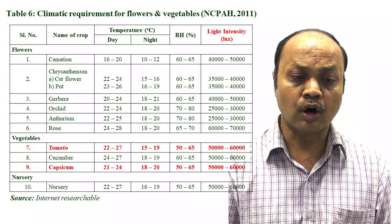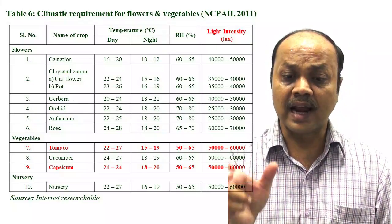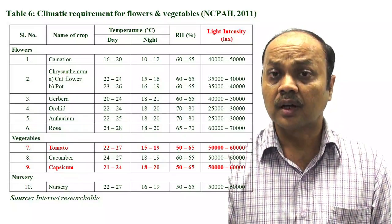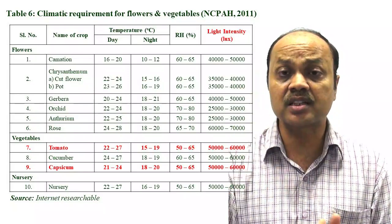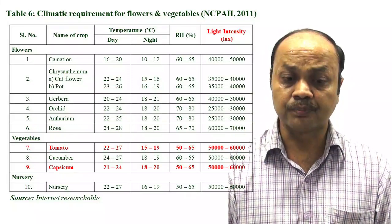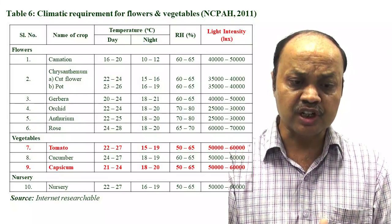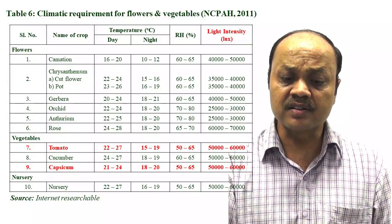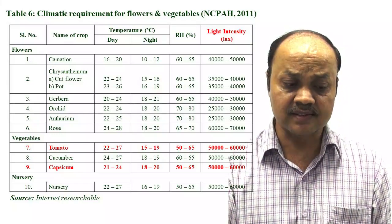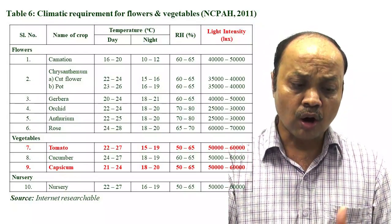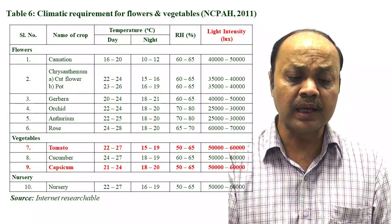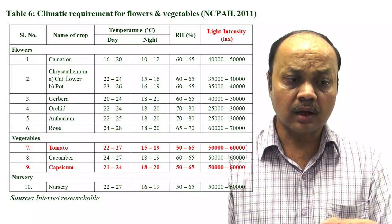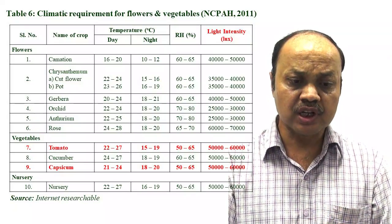Light is measured in terms of lux — lux means the light you are seeing, measured using a lux meter. For tomato, day temperature, night temperature, RH between 50 to 65%, and light intensity between 50,000 to 60,000 lux are given. Comparing tomato with capsicum or cucumber, the temperature range is broadly more or less the same — optimum temperature, optimum RH are given.